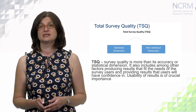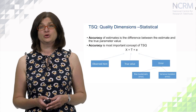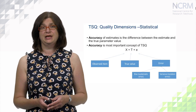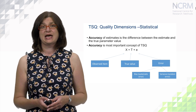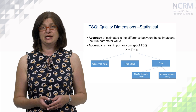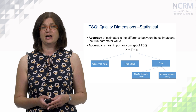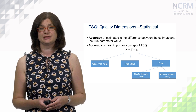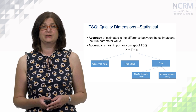Therefore, usability of results is of crucial importance. The statistical dimension is the most important concept of total survey quality, and accuracy is the main concept of statistical dimension. Accuracy of estimates is the difference between the estimate and the true parameter value. Accuracy is the most important because if the data are not correct and not accurate, all other non-statistical dimensions cannot be used.